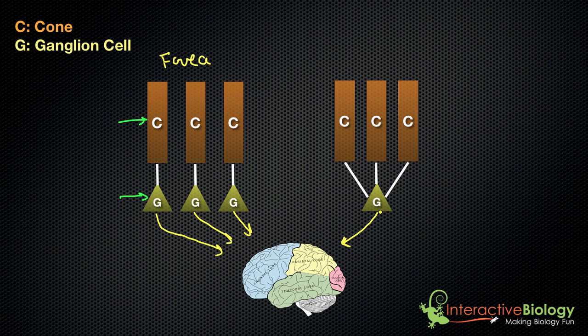When it's getting information from this one ganglion cell that's kind of trying to summarize all of the information that it's getting from multiple cones, it's not going to be as detailed as the situation that we have over here.